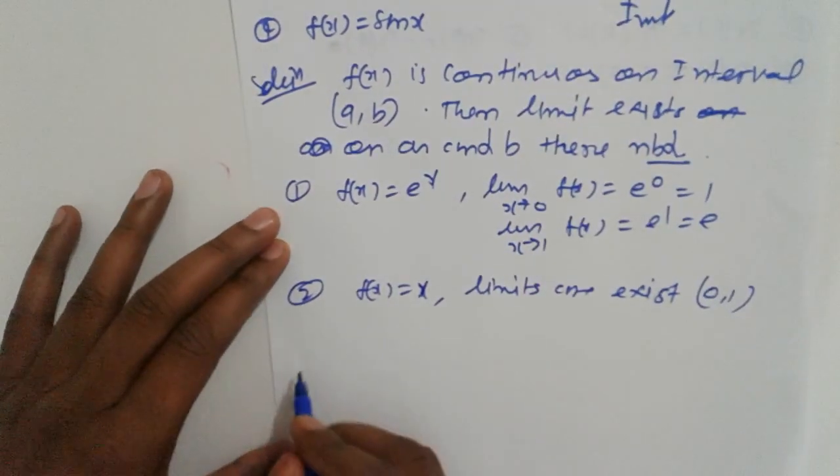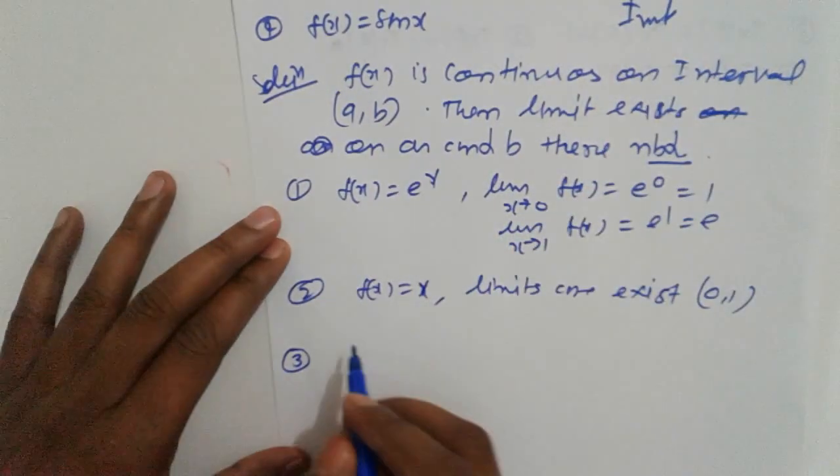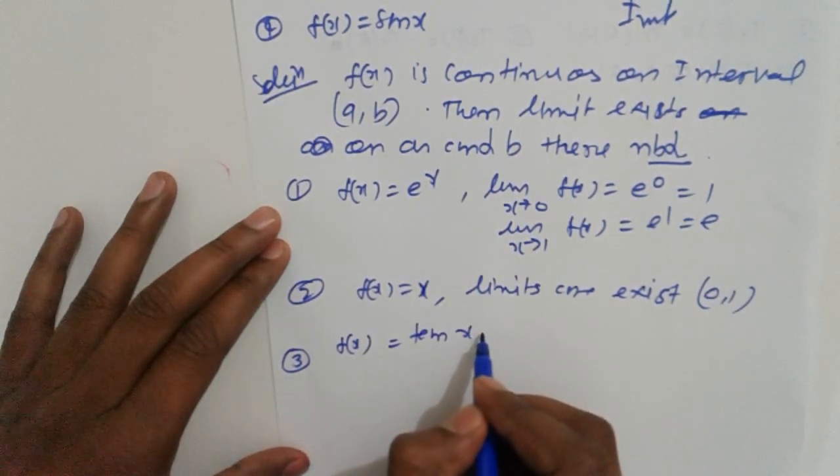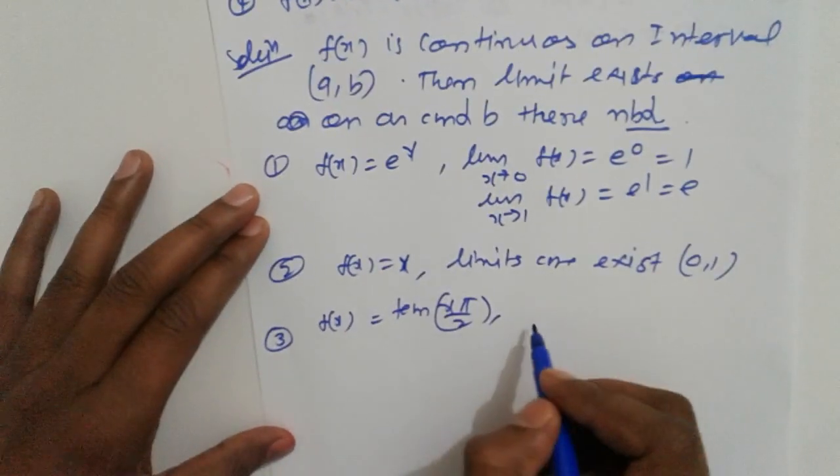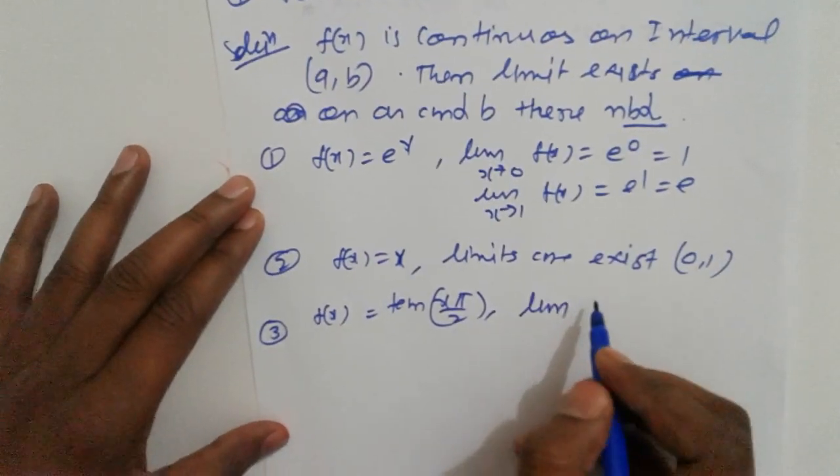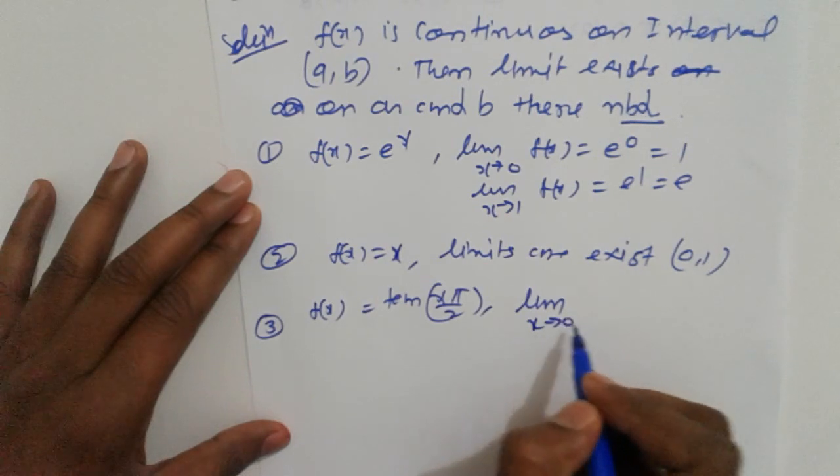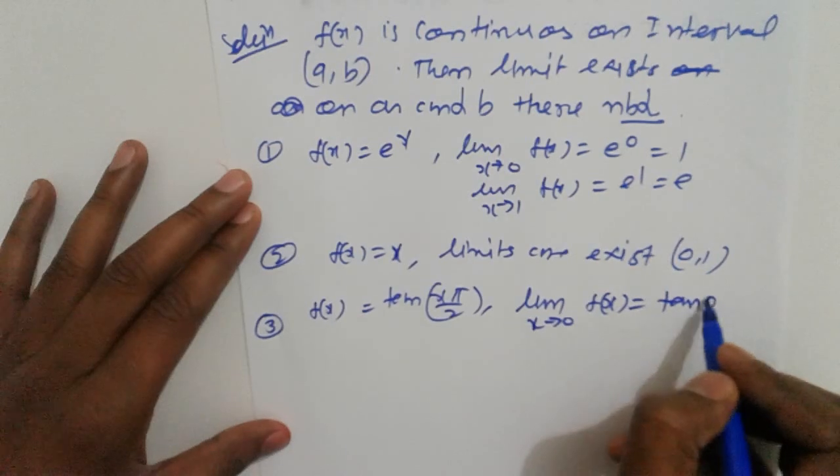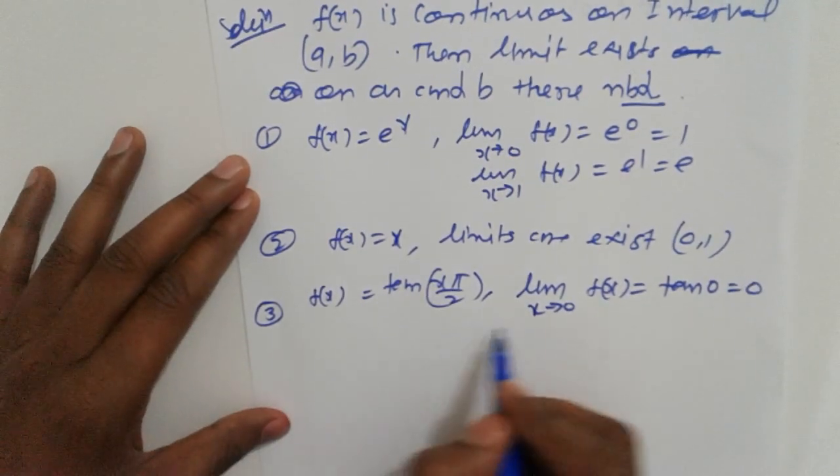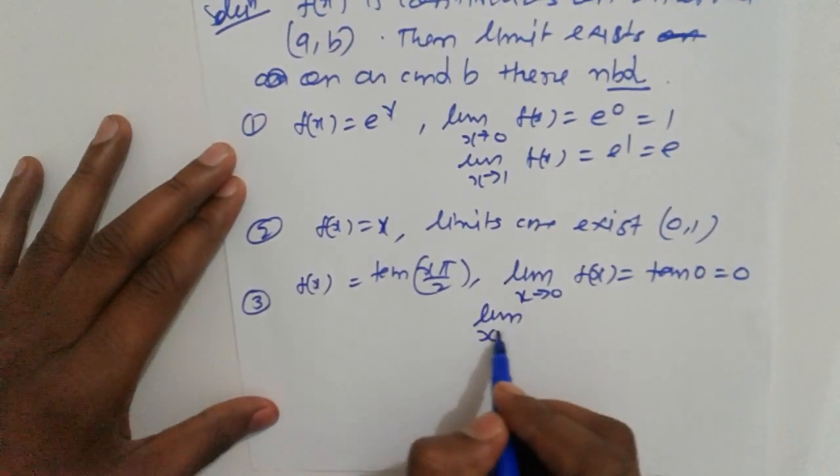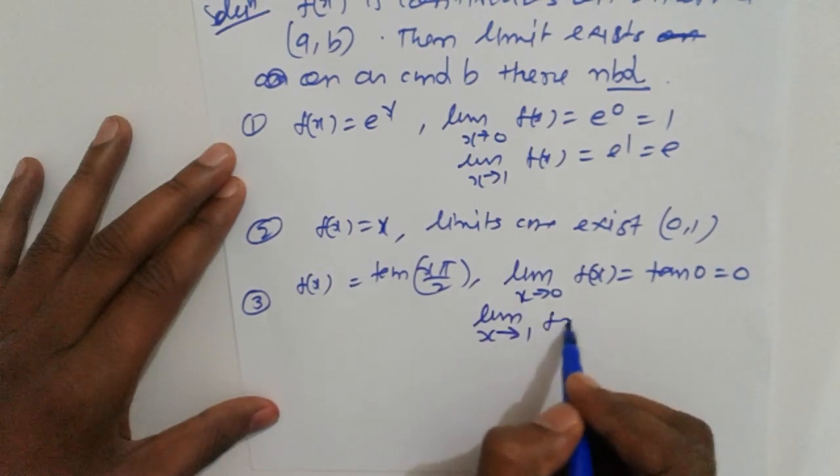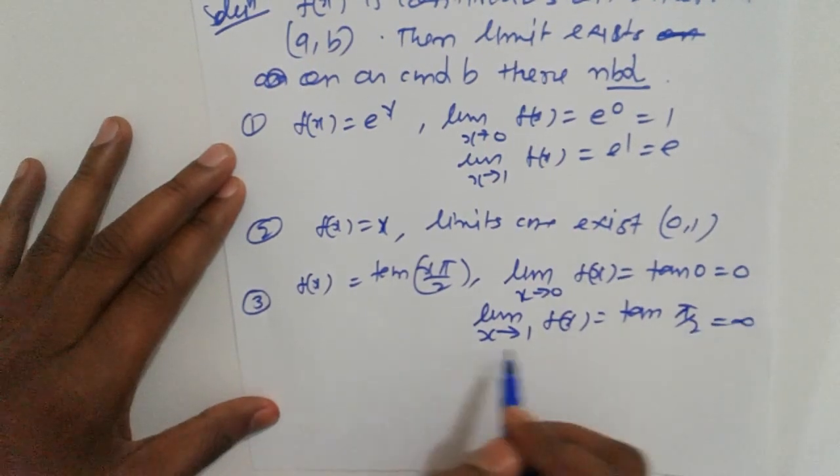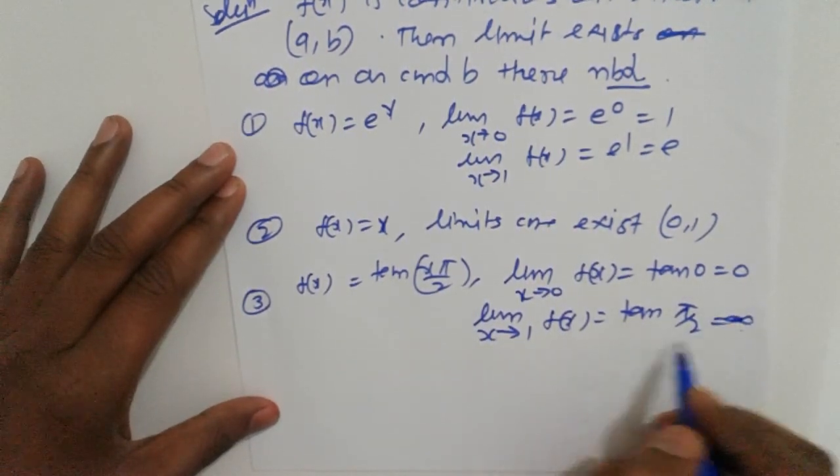Next, the third option: f(x) = tan(πx/2). Check the limits. Limit as x tends to 0: f(x) = tan(0) = 0. Limit as x tends to 1: f(x) = tan(π/2).